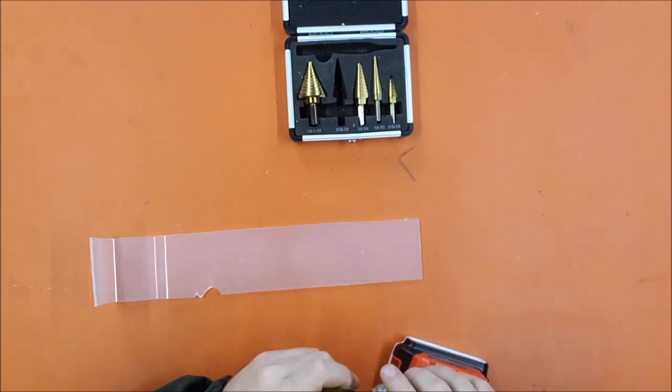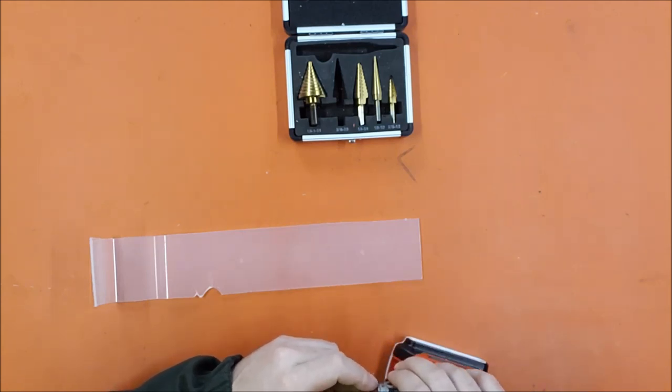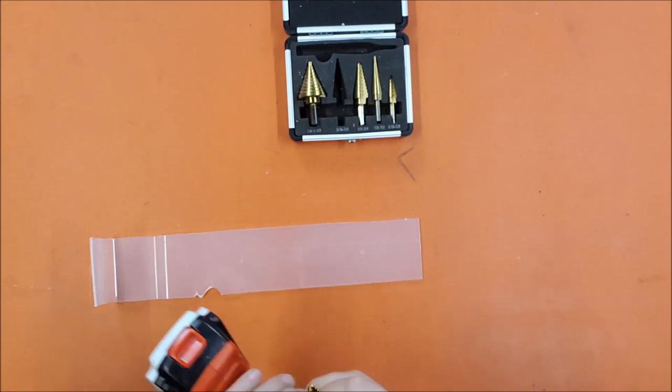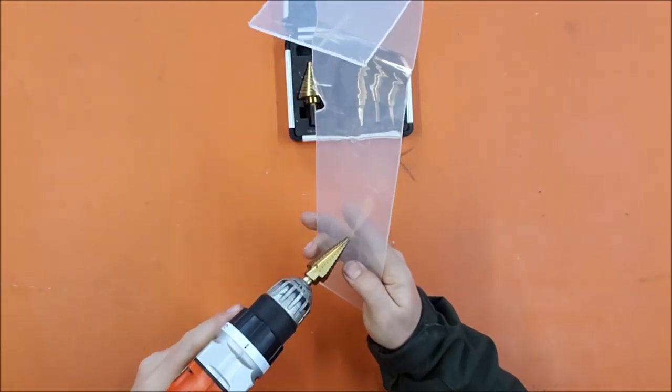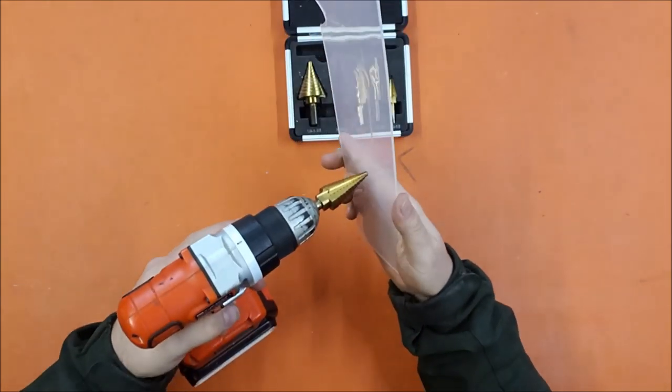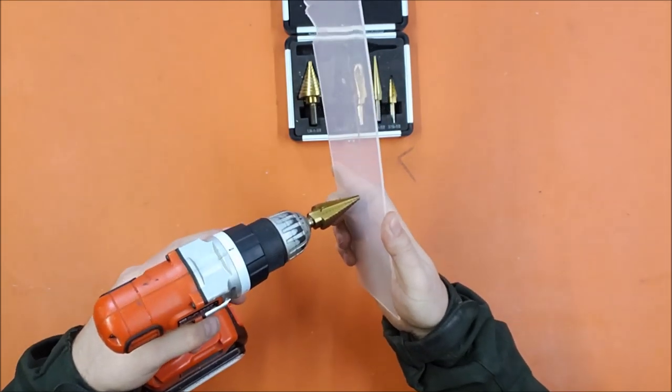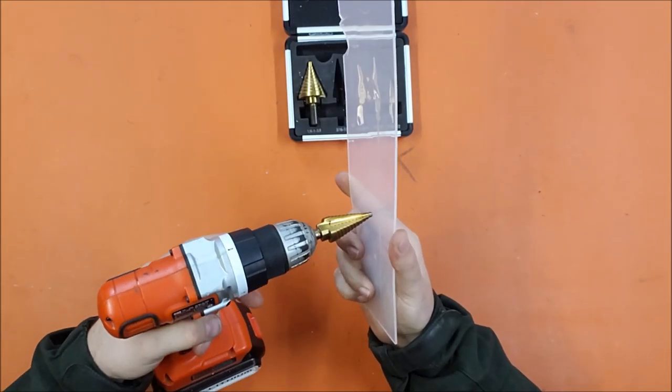If you've ever tried to start drilling a hole on a smooth surface like plastic or metal, the drill bit has a tendency to wander. Well, this will lock it in, and it will not wander, which is lovely.